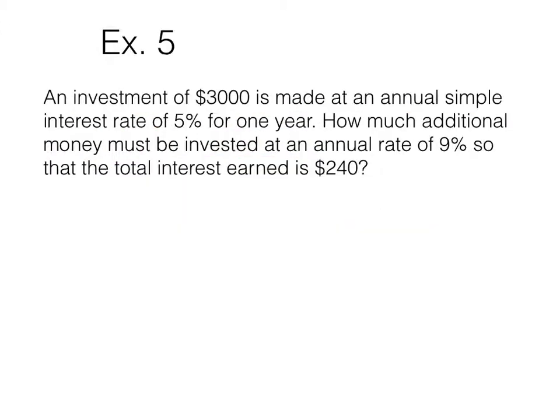An investment of $3,000 is made at an annual simple interest rate of 5% for one year. How much additional money must be invested at an annual rate of 9% so the interest earned is $240? So this is an I equals PRT. And since we have two investments, it's going to be I equals PRT plus PRT.